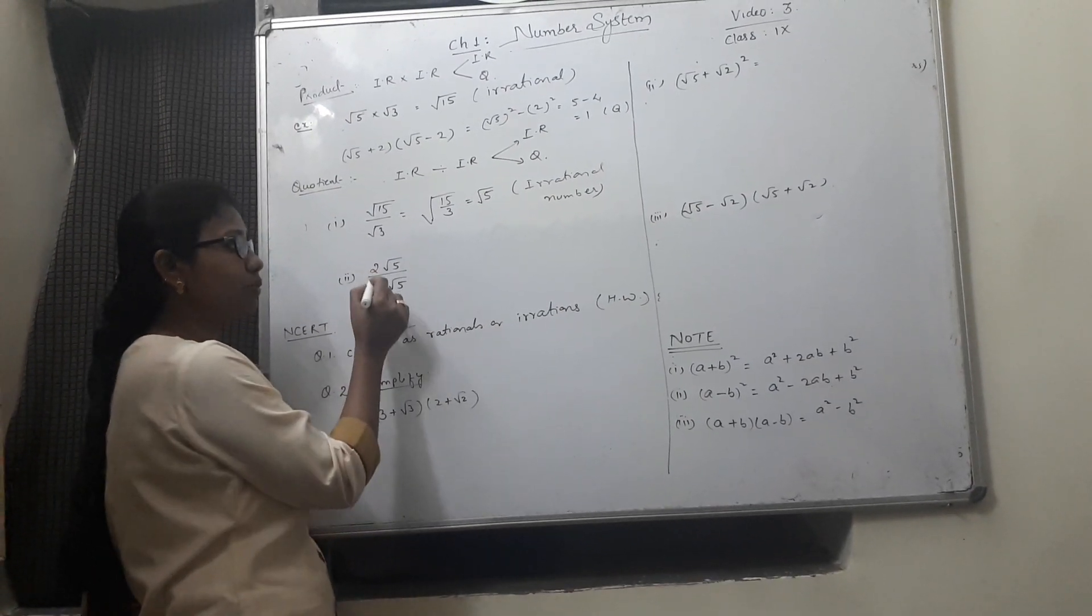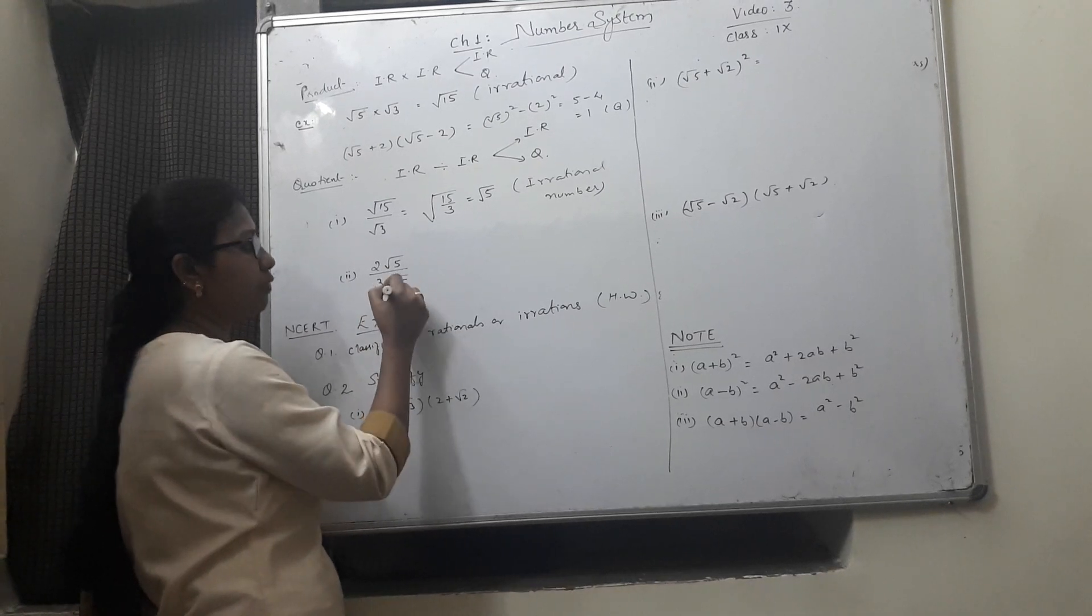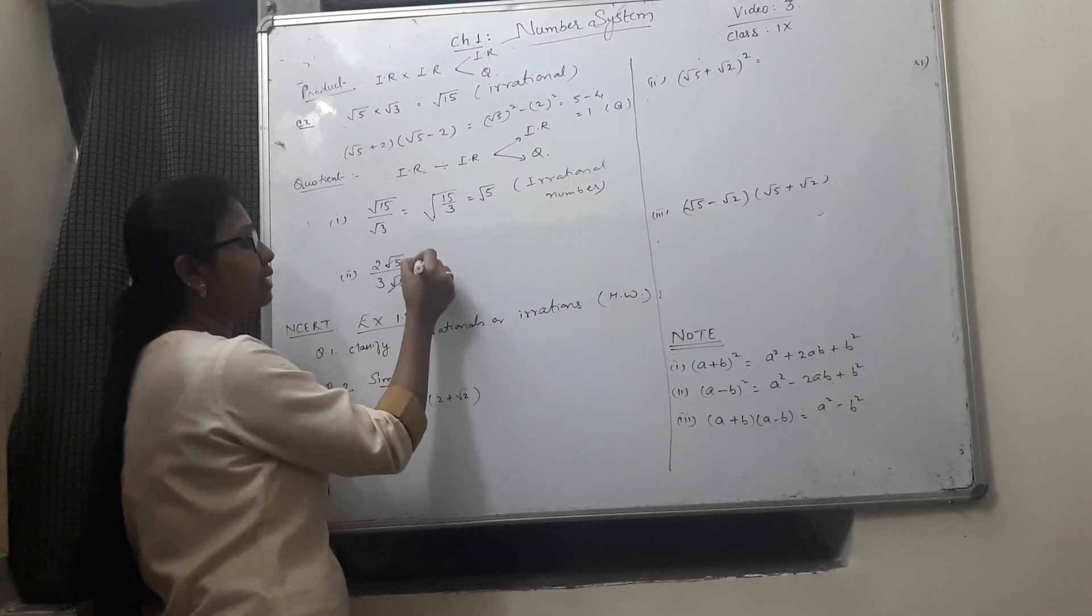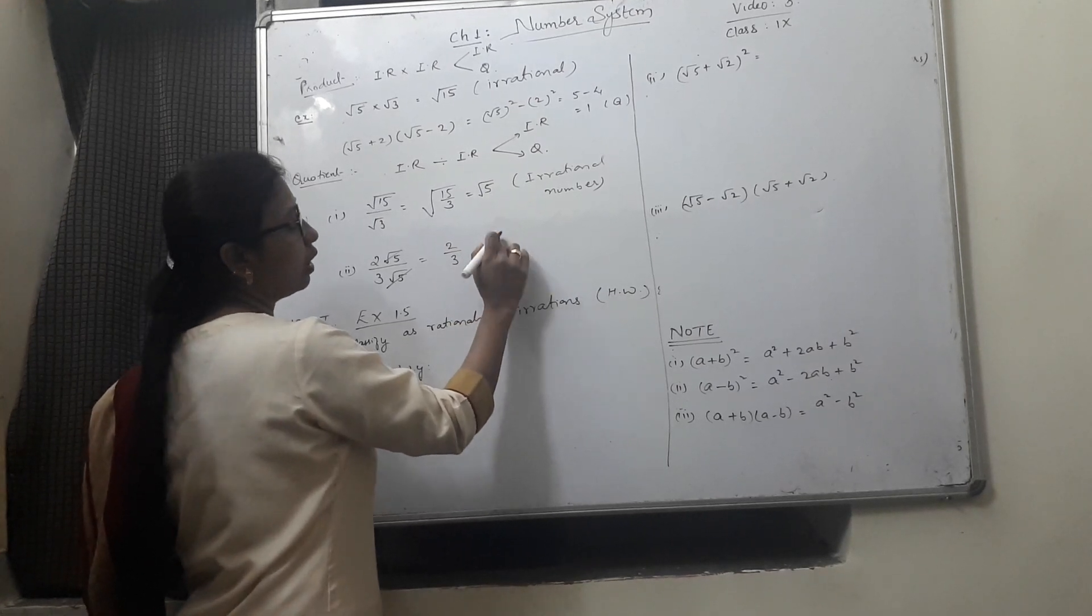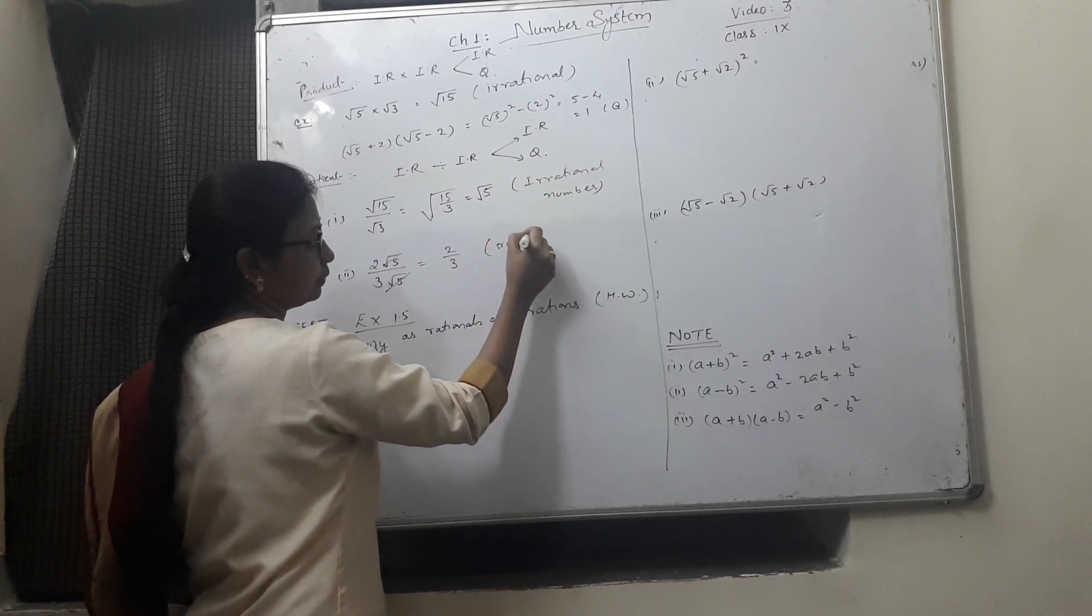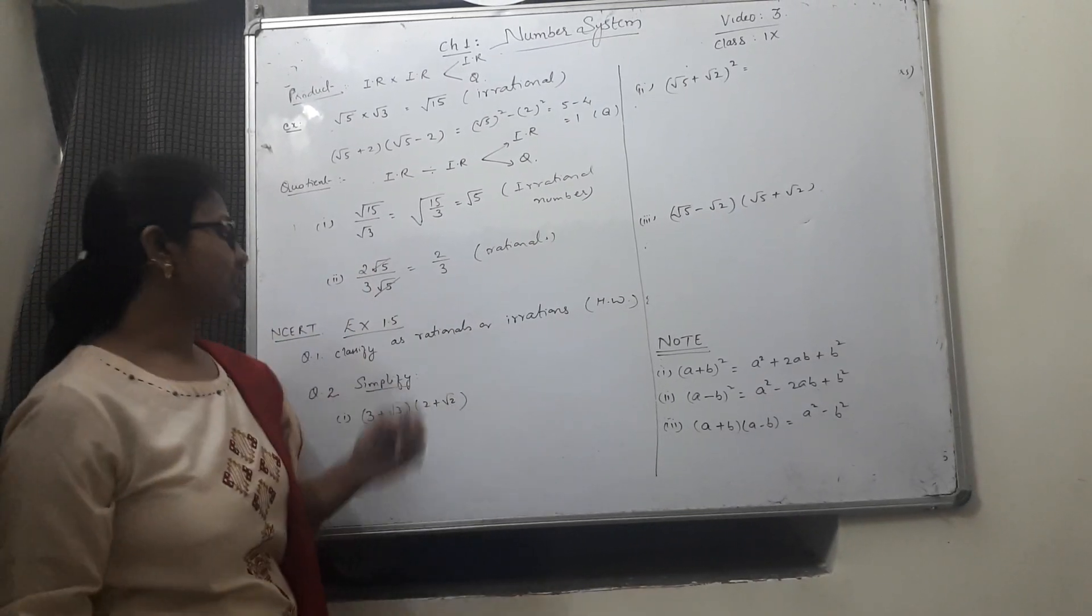Now another example is 2 root 5 divided by 3 root 5. Root 5 root 5 will be cancelled. The result is 2 by 3 which is clearly a rational number. These were the properties of irrational numbers.